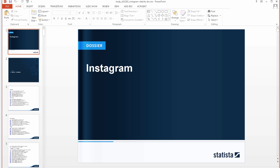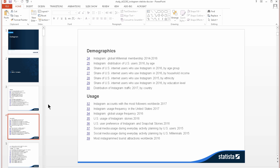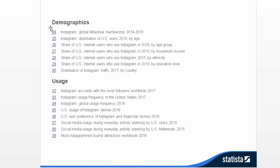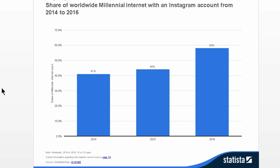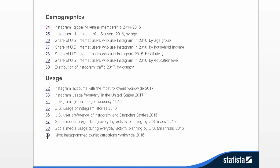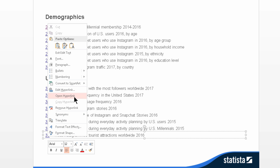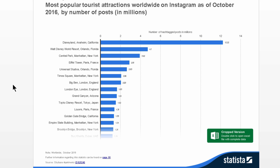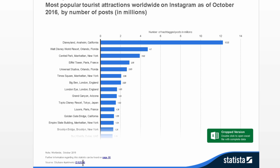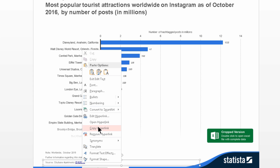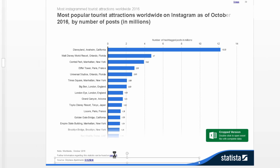Now that we have the dossier open in PowerPoint, you can click on a link in the table of contents to jump to a particular statistic. Once you've found one that you want to use, you'll need to get citation information for it. The links at the bottom of each slide will take you to the individual statistics page on Statista, where you can get the citation information and download individual files in whatever format you want.